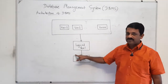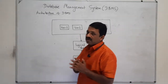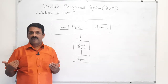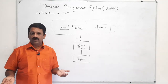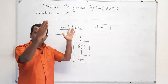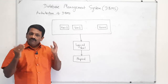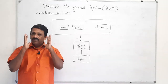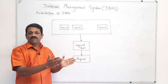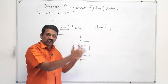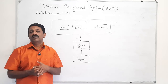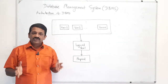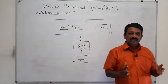An analogy: in a shop, a customer wants some products but does not need to know where the product is stored in the repository. The customer need not know where it is physically stored. It is the responsibility of the salesperson to retrieve it from where it is stored and bring it to the customer. The customer is at the view level.